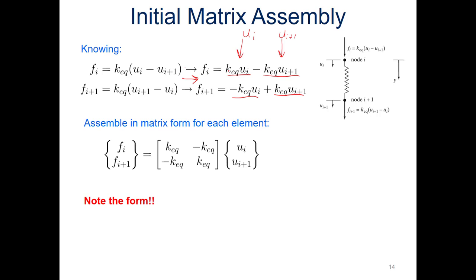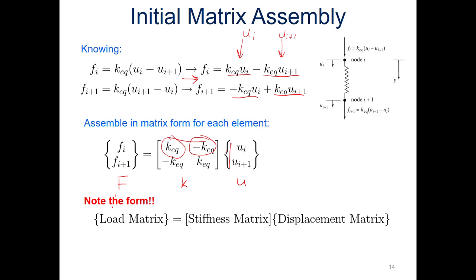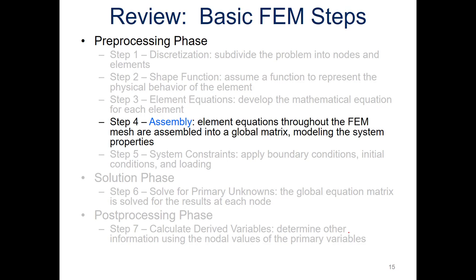Note the form: we have a load matrix equals a stiffness matrix times a displacement matrix. The stiffness matrix contains the positive and negative k_eq values — k_eq in one position, negative k_eq in another — and multiplying out recreates our two equations for the forces at nodes i and i+1. This elemental form, [F] = [K][U], is something we'll see again and again.